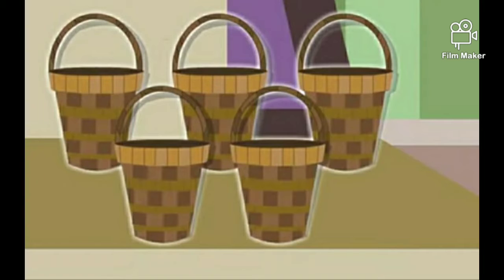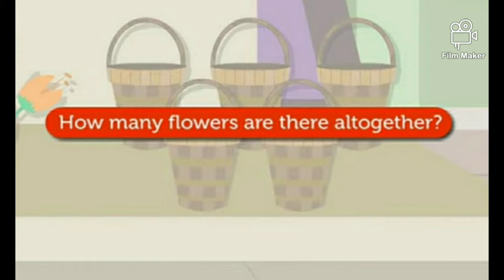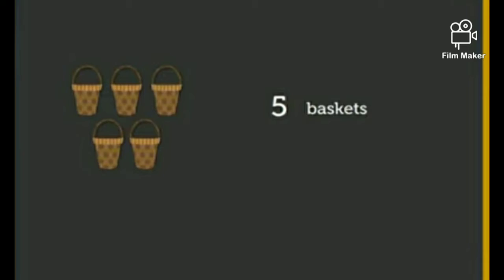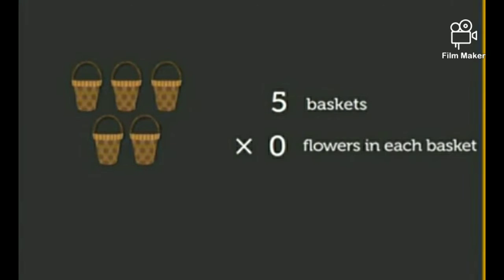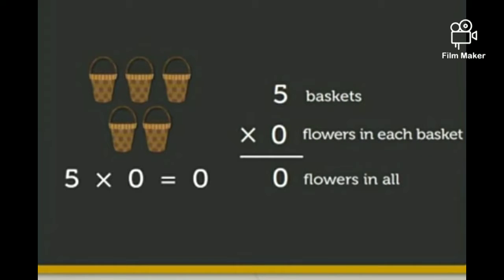We don't have any flowers. If anyone asks how many flowers are there altogether — we have five baskets in total and zero flowers in each basket. So if we multiply five baskets into zero flowers, we get zero. We have a total of zero flowers in all.